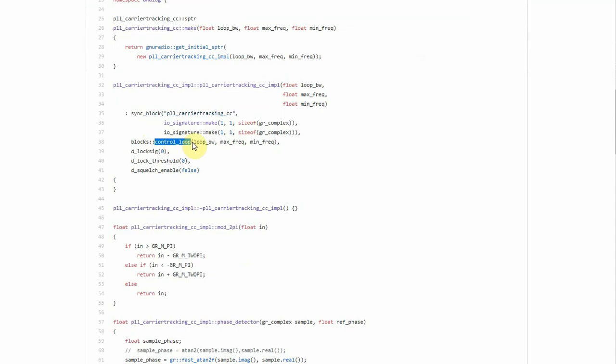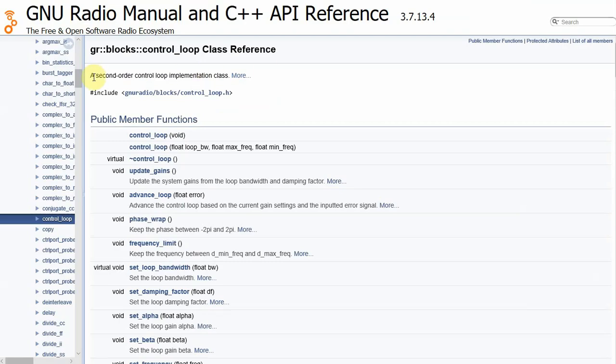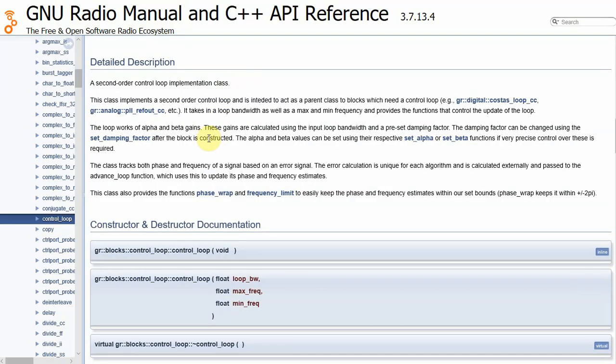Once we go through this C++ code, we find the control loop class. To go to its reference, we find that this is a second order control loop implementation class. And for a detailed description, we read this document. This class implements a second order control loop, so that it can track both the phase and frequency, and is intended to act as a parent class to blocks which need a control loop. For example, Costas loop, PLL refout, PLL carrier tracking, and so on.